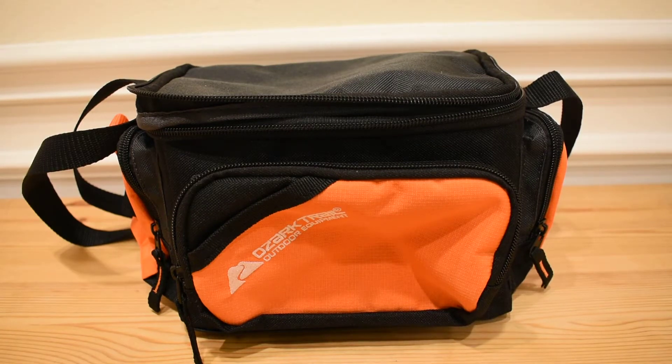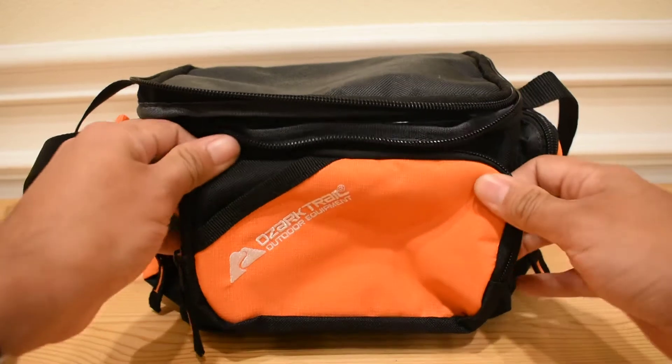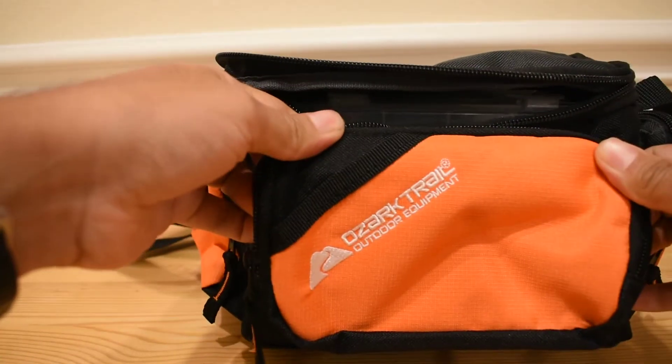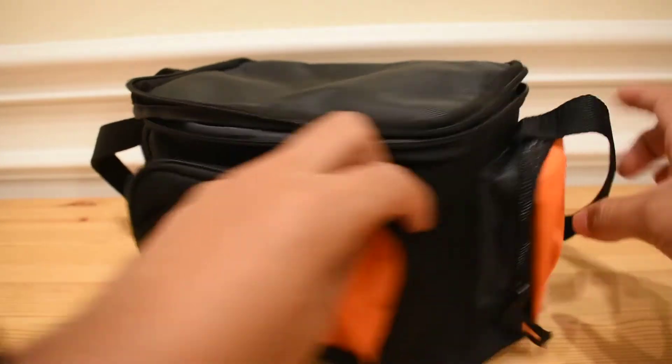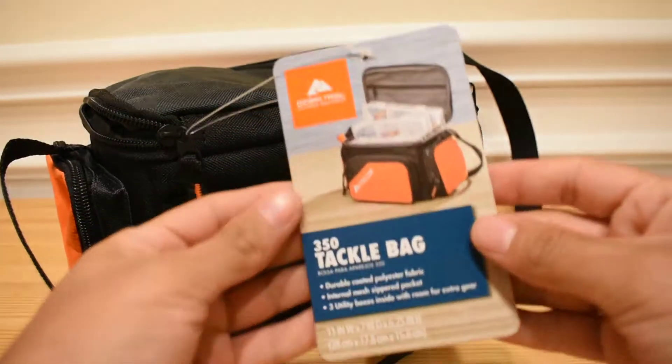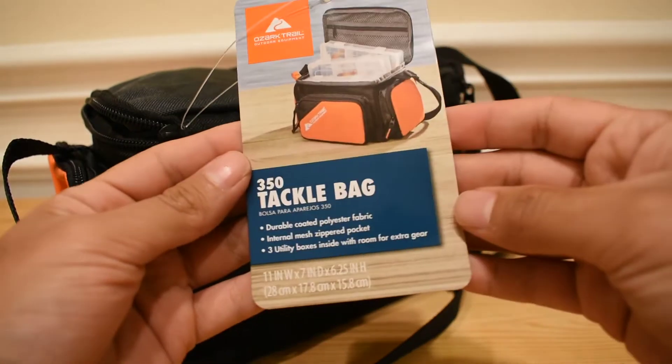Hello YouTube, Real Shooting here. In today's video I'm going to be reviewing the Ozark Trail tackle bag. This is the smallest bag that they offer at Walmart. They have a medium size also and I believe there's a large size. So this one here is the 350 tackle bag.